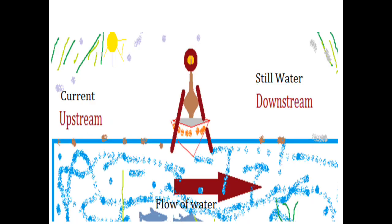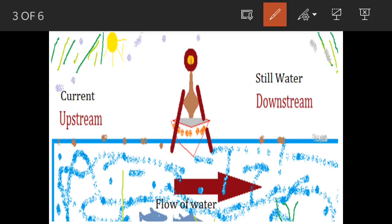In the question, they are asking about still water and current. I have equated them here. Downstream will be still water side, and current will be upstream side. If this boat is going at speed x...